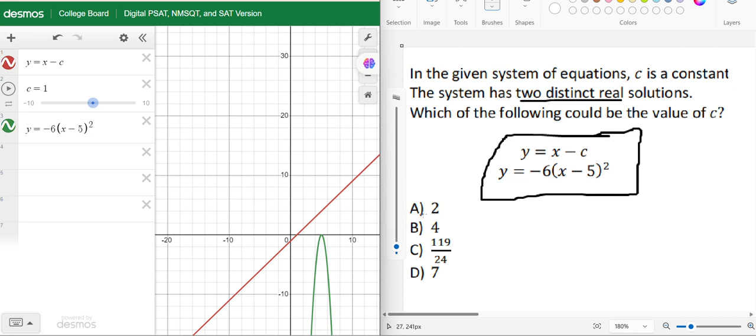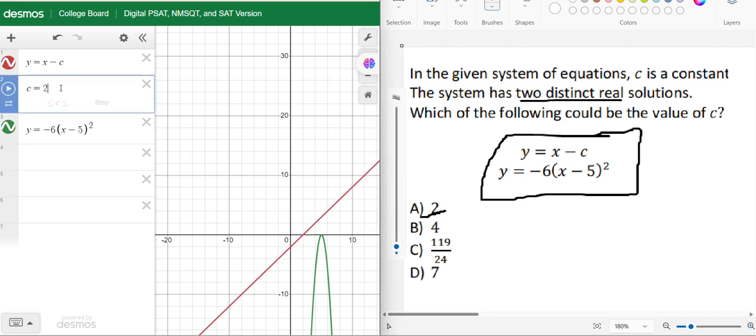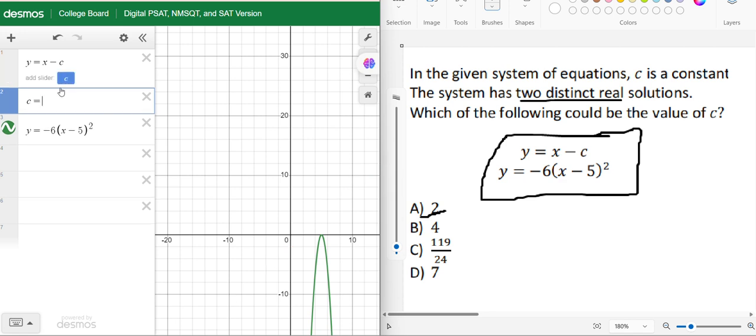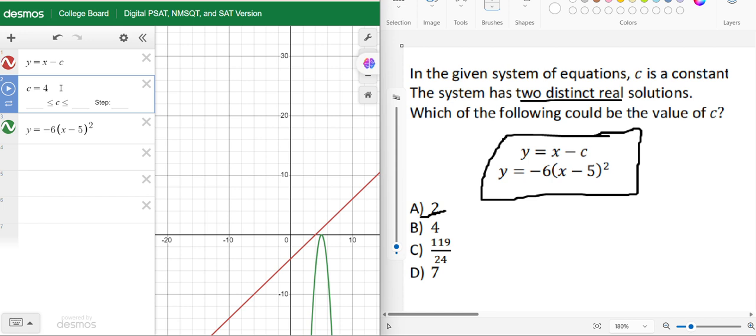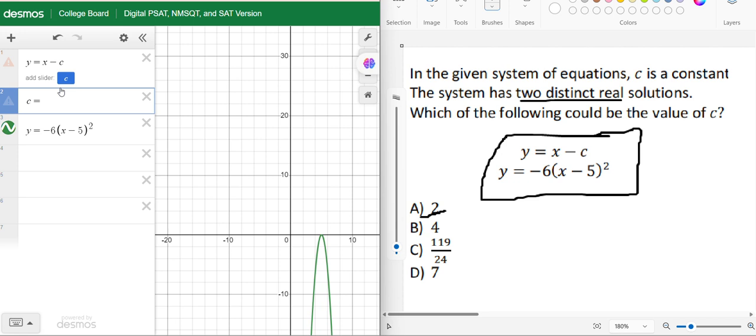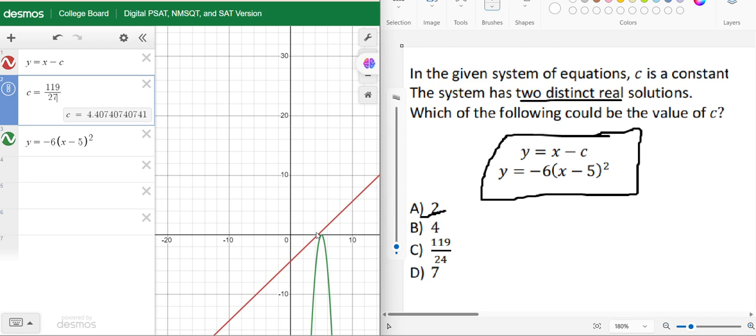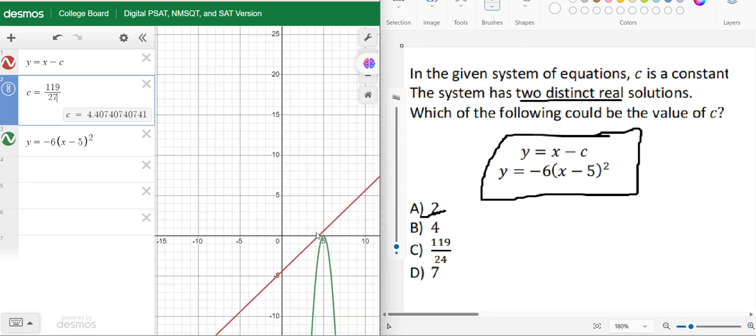We have to find the value of c. Now let us check from the options. First, let us use c equals 2. In this case c equals 2, we are not getting any solution, so it cannot be true. When c equals 4 also, we are not getting any solutions, it is also not true. Take c equals 119/24. Are we getting solution? No we are not, so this cannot be our answer.